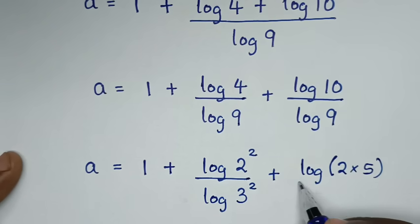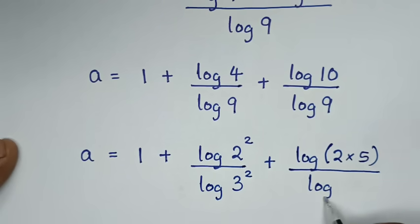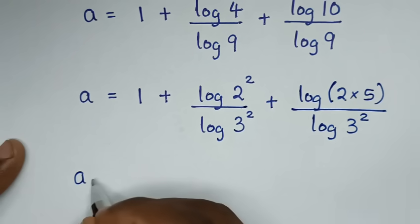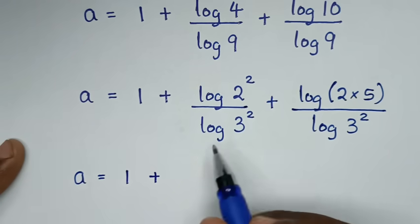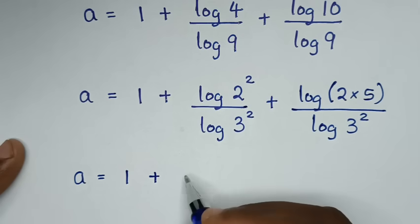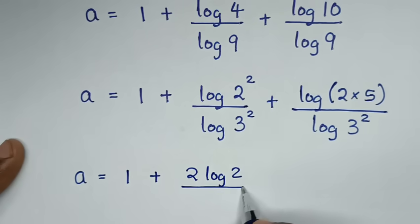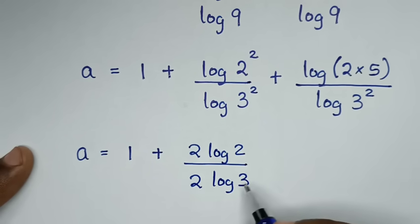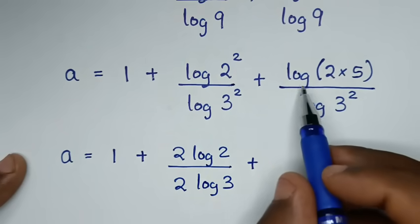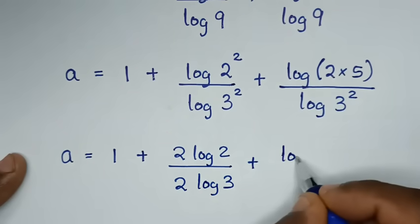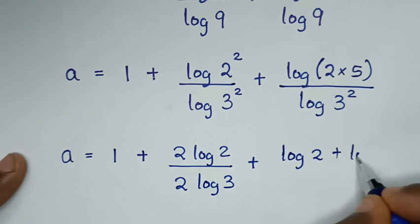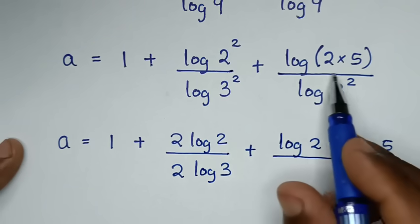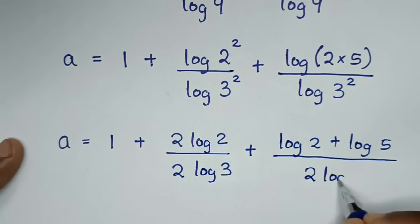Then over log of 9, where log of 9 is the same as 3 squared. So it will be a is equal to 1 plus — this power of 2 will move to the base — so it will be 2 log of 2 over, and this power of 2 will move to the base, so it will be 2 log of 3. And log of 2 times 5 becomes log of 2 plus log of 5, then over log of 3 power of 2. This power of 2 will move to the base, so it will be 2 log of 3.